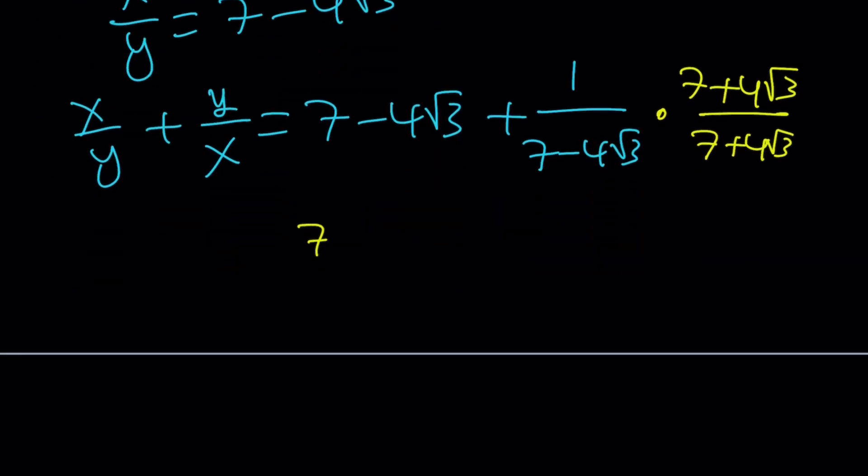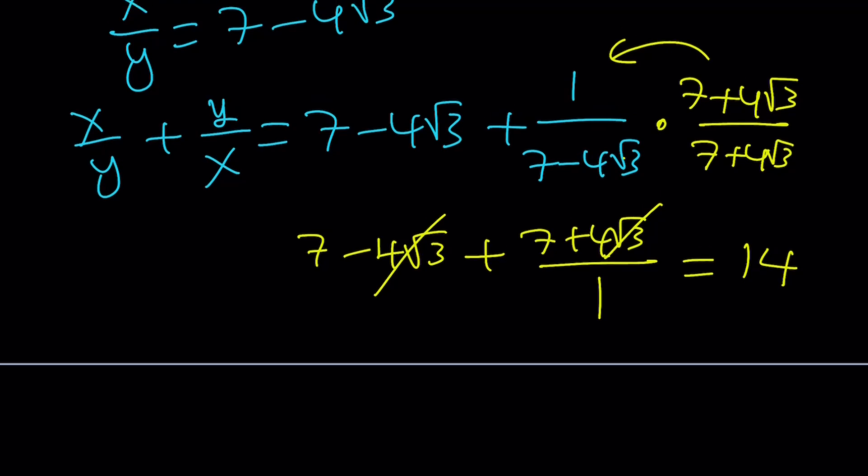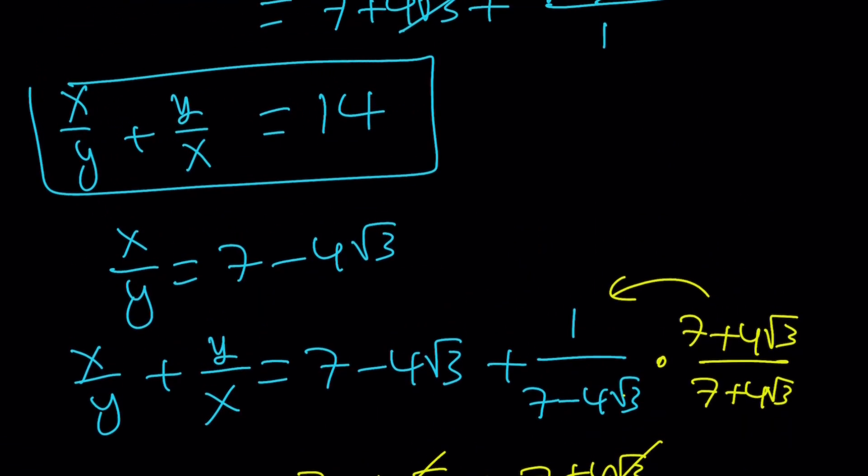And that will give us 1 again from difference of 2 squares. So we're getting 7 minus 4 root 3. This is 7 plus 4 root 3. Divide by 49 minus 48, which is 1. And these two cancel out. And we get 14 again. So it doesn't matter which x over y value you use. x over y plus y over x is always going to be the same.